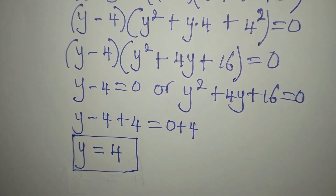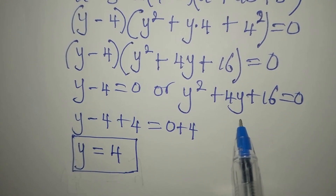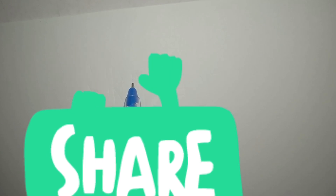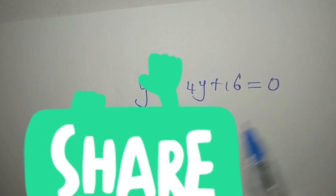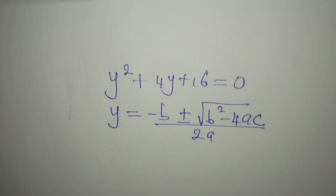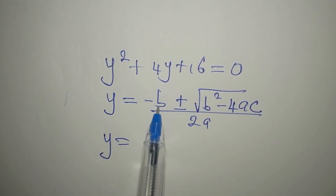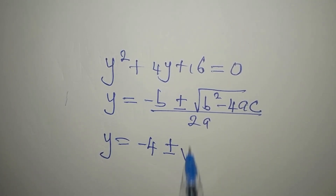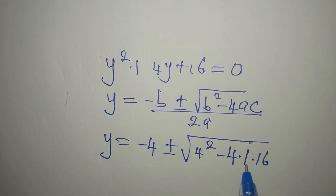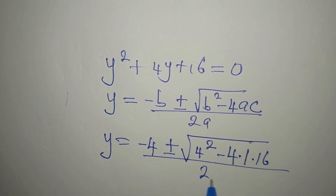To get the other solutions we go to y squared plus 4y plus 16 equals zero and apply the quadratic formula: y equals negative b plus or minus square root of b squared minus 4ac, divided by 2a. Here a is 1, b is 4, and c is 16. So y equals minus 4 plus or minus square root of 4 squared minus 4 times 1 times 16, all divided by 2 times 1.